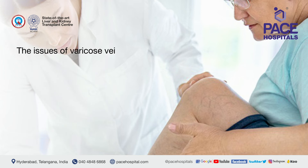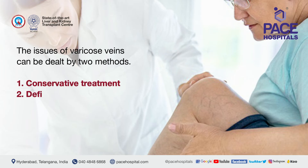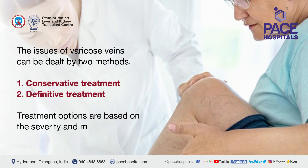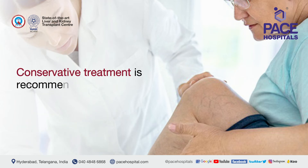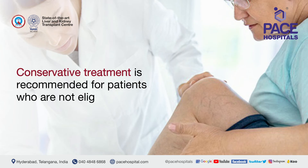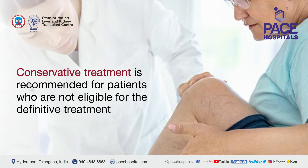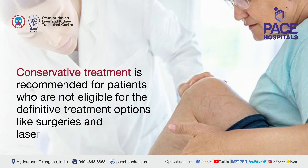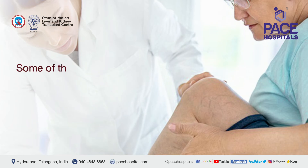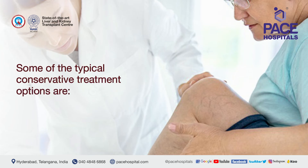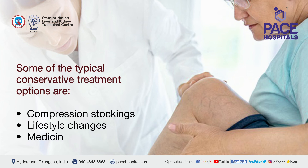What are the treatment options for varicose veins? The issues of varicose veins can be dealt with by two methods: conservative treatment and definitive treatment. Treatment options are based on the severity and medical condition of the patient. Conservative treatment is recommended for patients who are not eligible for definitive treatment options like surgeries and laser treatment. Conservative options include compression stockings, lifestyle changes, and medicines.